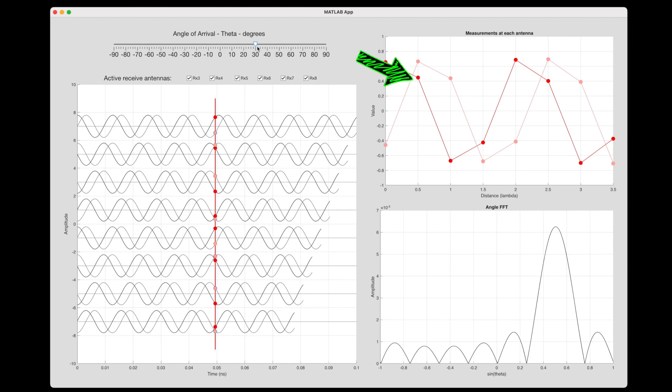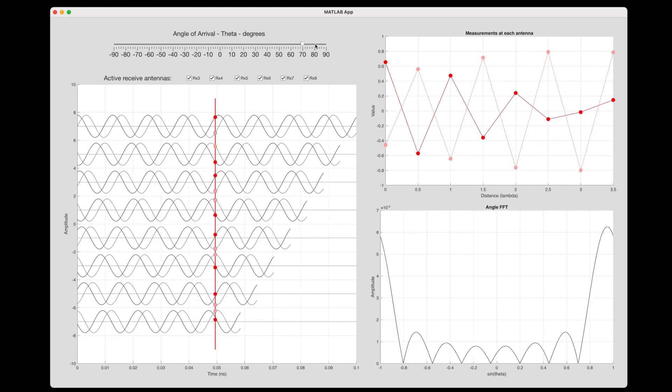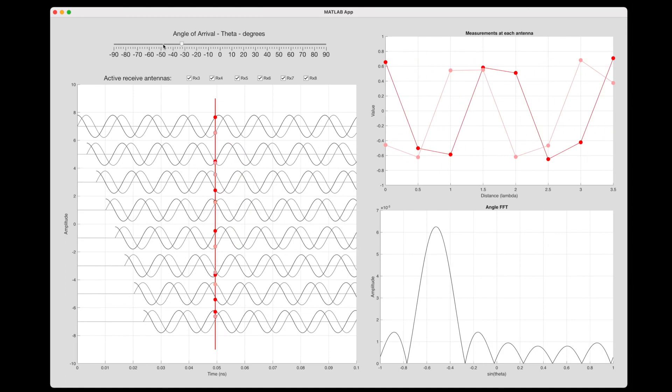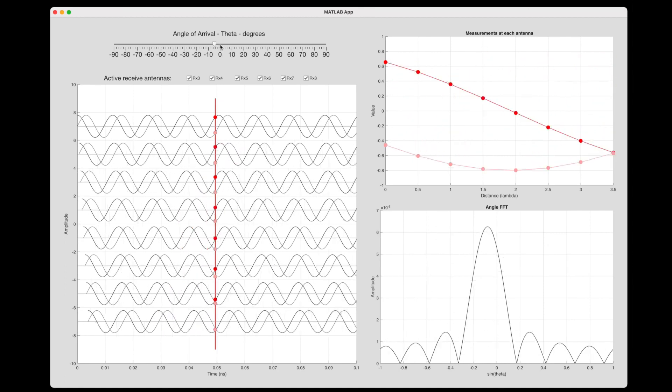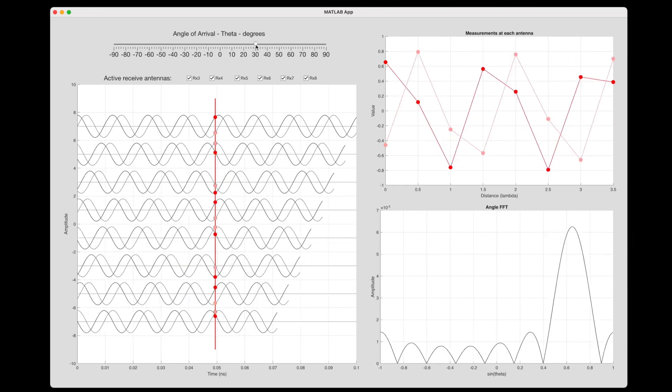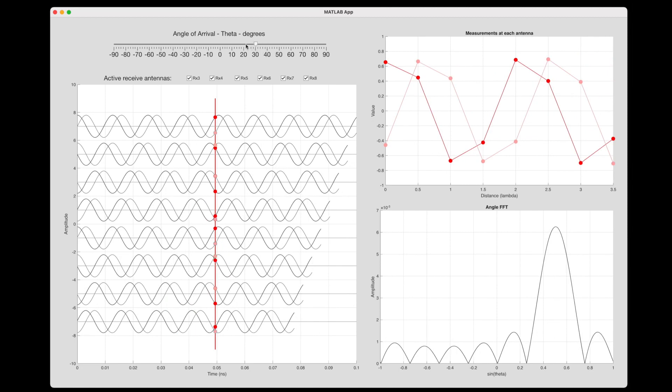Taking the FFT of this signal produces this plot, where the x-axis is the sine of theta. And to find the angle, we just need to find where the max peak is, which is around sine theta of 0.5 or an angle of 30 degrees. And that's exactly where the object is. And since we're dealing with IQ signals, which means a real and imaginary component, we can determine whether the angle is positive or if it's negative. And this is analogous to what we did in the last video, where we were only able to tell velocity direction when we had two IQ signals. If we only had a real stage on this radar, then we would only be able to tell the magnitude of the angle and not the sign.